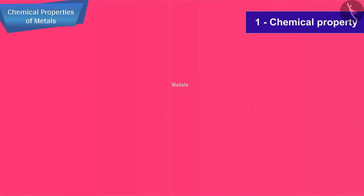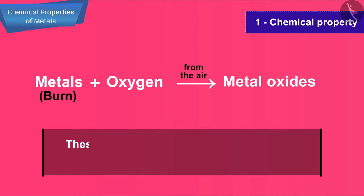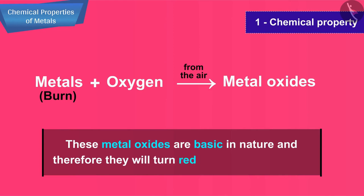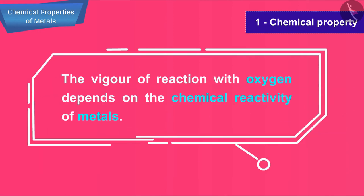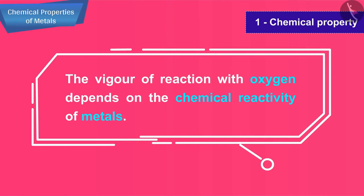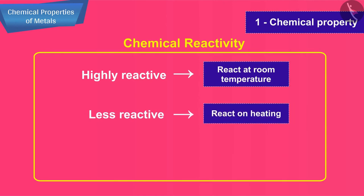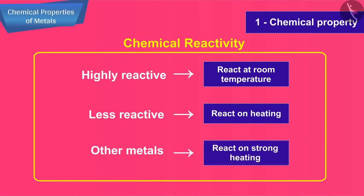When metals are burnt in air, they react with oxygen from the air to form metal oxides. These metal oxides are basic in nature and therefore they will turn red litmus solution blue. The vigor of reaction with oxygen depends on the chemical reactivity of metals. Highly reactive metals react at room temperature, a less reactive metal will react on heating, whereas still other metals react on strong heating.